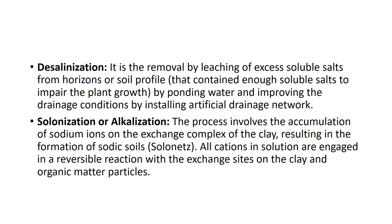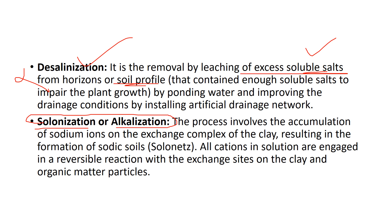Desalinization is the removal or leaching of excess soluble salts from the soil profile — essentially the reversal of salinization. The next process is solonization or alkalization, where the soil accumulates a large number of bases — cations such as calcium, magnesium, and manganese — leading to alkaline soil conditions.